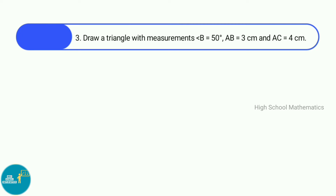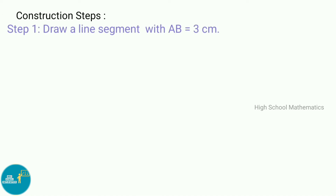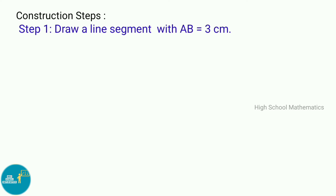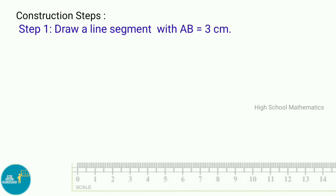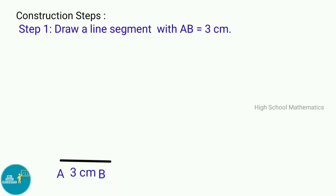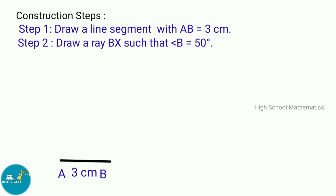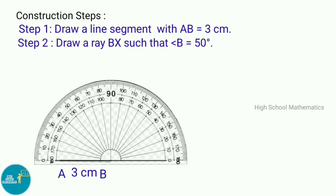Third sum: Draw a triangle with measurements angle B equals 50 degrees, AB equal to 3 centimeters, and AC equal to 4 centimeters. Construction steps — Step 1: Draw a line segment AB equals 3 centimeters. Step 2: Draw a ray BX such that angle B equals 50 degrees.